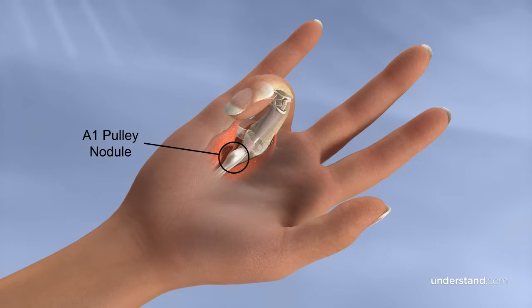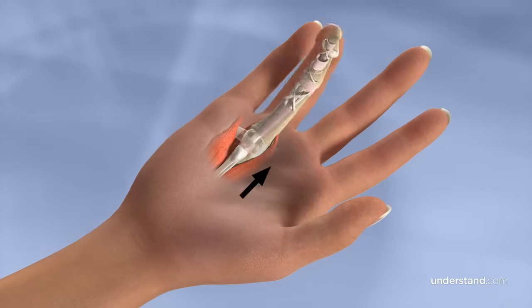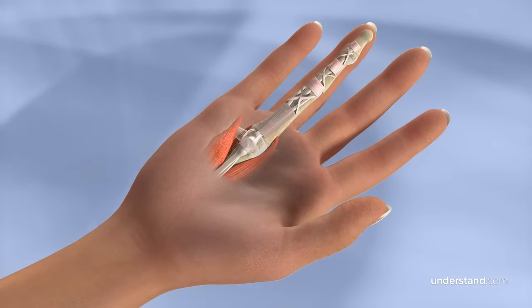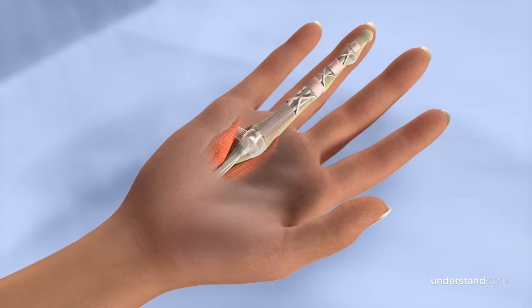Inflammation develops, causing the pulley to narrow, and the tendon catching worsens. The difference between the diameter of the tendon and the A1 pulley opening causes the tendon to catch, preventing smooth motion of the tendon pulling into the sheath during finger extension.